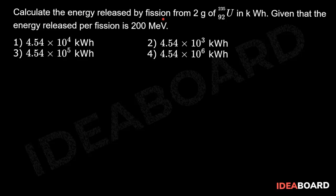Calculate the energy released by fission from 2 grams of uranium-92-235 in kilowatt hours, given that the energy released per fission is 200 million electron volts.